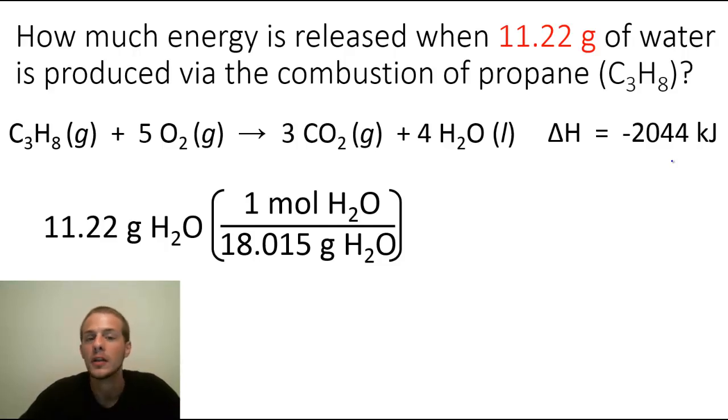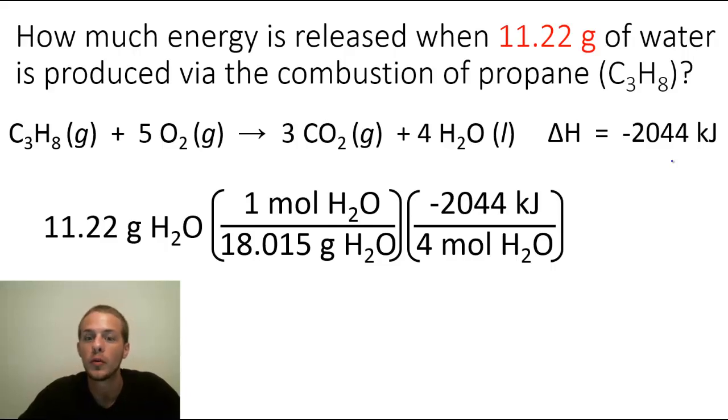And now that we have the amount of water in moles, we can use the relationship that is inherent within the chemical equation and the delta H value. It's going to be four moles of water to minus 2,044 kilojoules. And again, before we go reaching for that calculator, we want to make sure that all of our units except for kilojoules cancel. So it looks like grams of water are going to cancel and it also looks like moles of water are going to cancel.